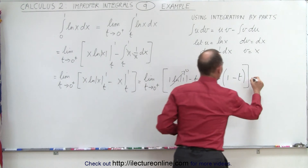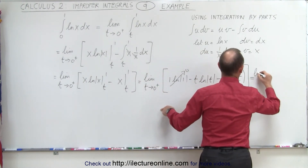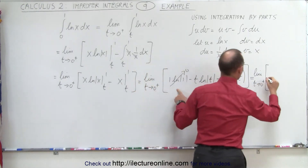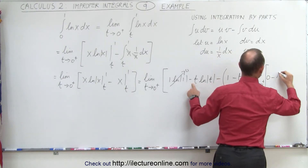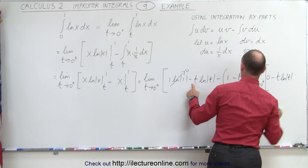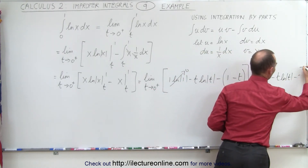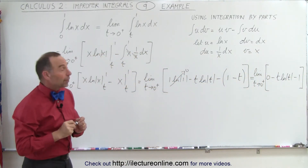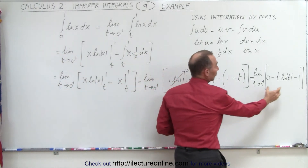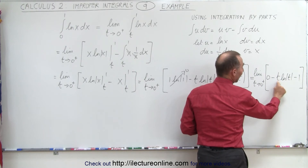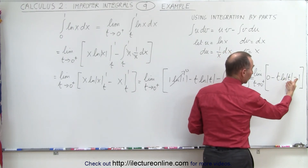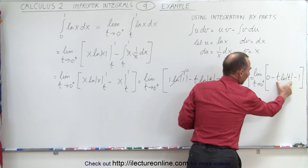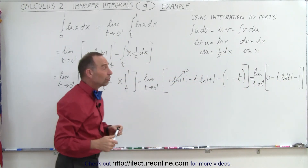Simplifying, this equals the limit as t approaches 0 from above of: 0 minus t times the natural log of t, minus 1. We have a problem, because if we let t go to 0, this middle term becomes 0 times the natural log of 0, which converges to infinity — so 0 times infinity is definitely undefined. Now we need to use another technique to handle this middle term, which means we have to use L'Hôpital's rule.